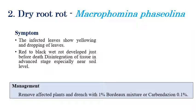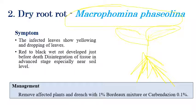The next disease is dry root rot, caused by Macrophomina phaseolina. As the name indicates, the roots dry out. Infected plants produce leaves that are yellow in color, which also droop down in later stages. The major symptom is rotting or blackening of the root. The tissues are disintegrated and we can also observe the formation of black color sclerotia when we examine the stem or vascular bundles.